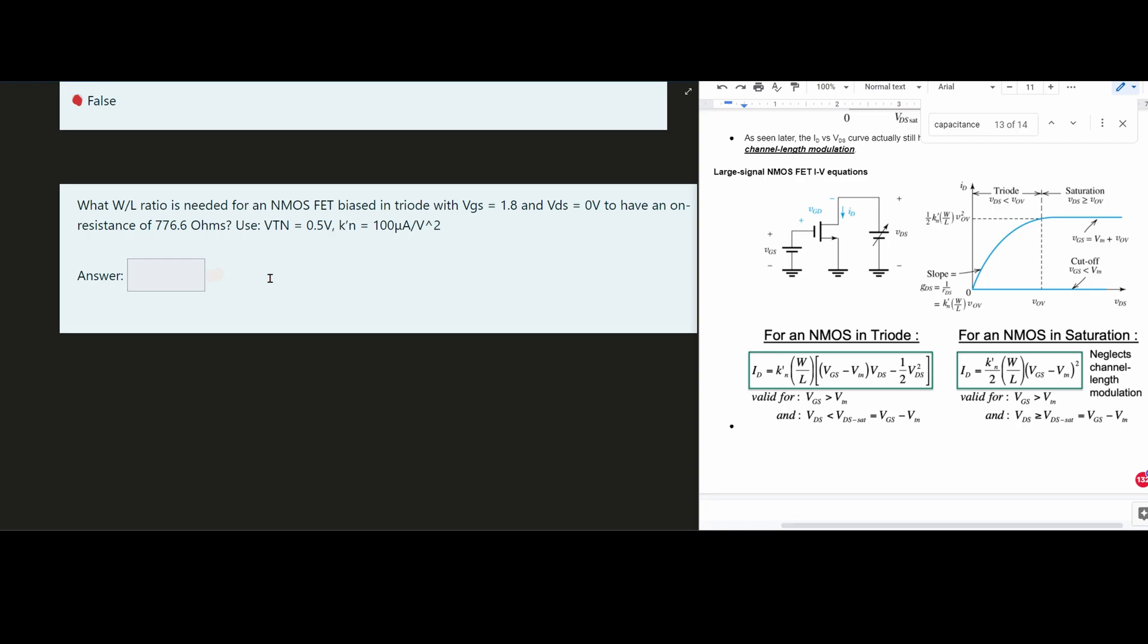For this question, we're asked what W/L ratio is needed for an N MOSFET biased in triode with VGS equal to 1.8 and VDS equal to 0 volts and to have an on resistance of 776.6 ohms. We have these other values here.